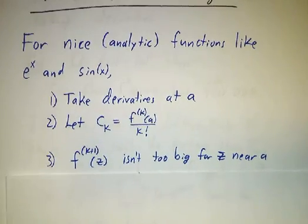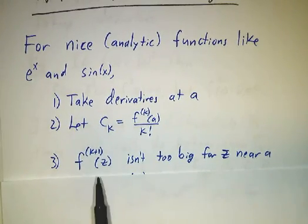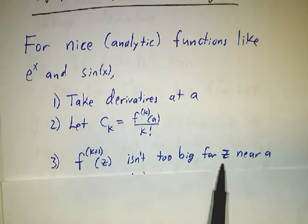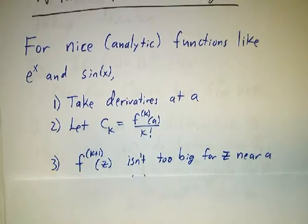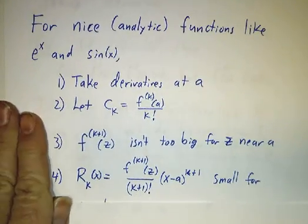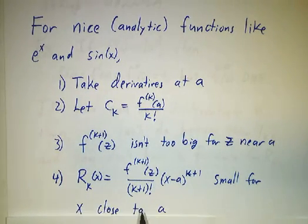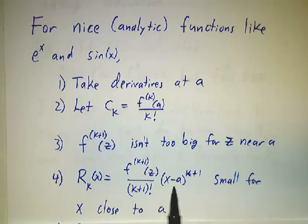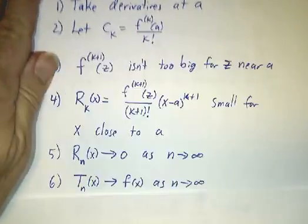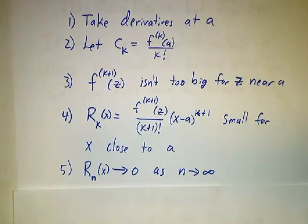And then we hope that the k plus first derivative isn't too big. And if it's not too big, then we know that the remainder term is fairly small, at least when x is pretty close to a. And if the remainder term is small, and if it gets smaller and smaller as we take n goes to infinity.